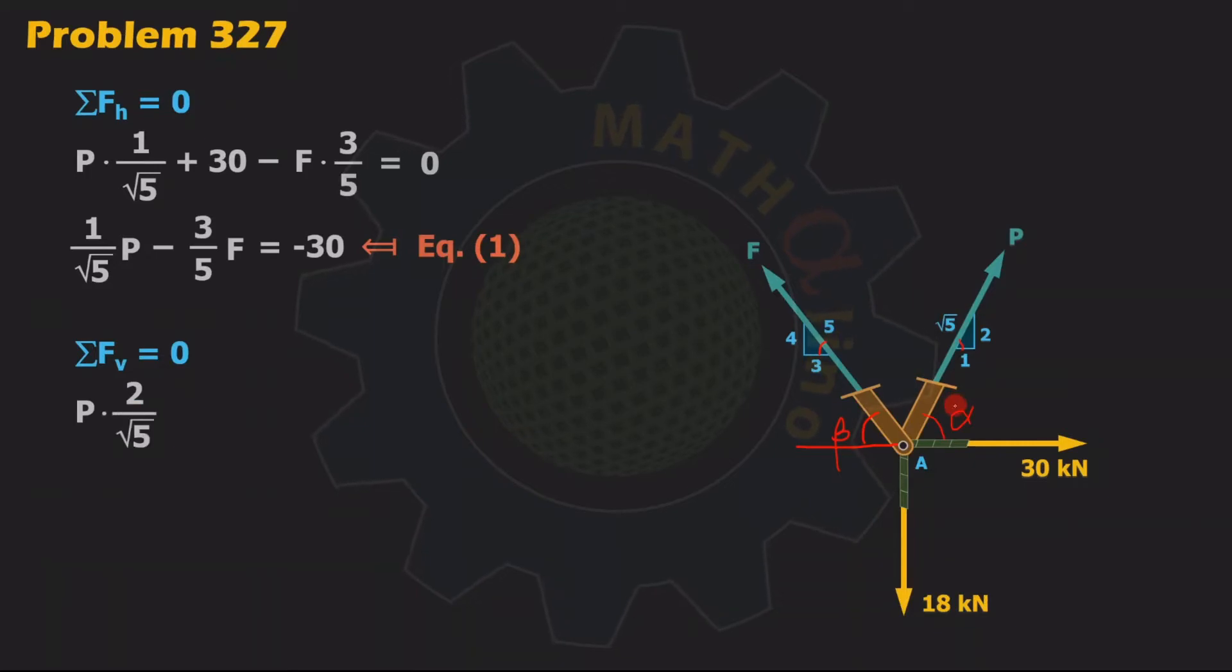Plus the vertical component of this F, that is F sine of beta. Sine of beta from this triangle is 4 fifth. Minus the downward force 18 is equal to 0.